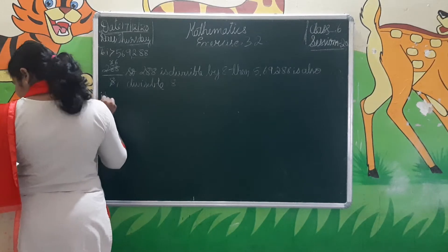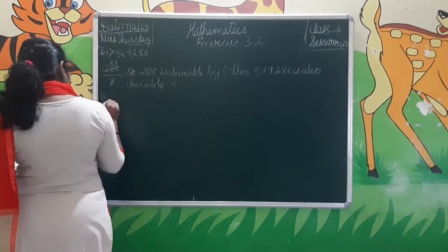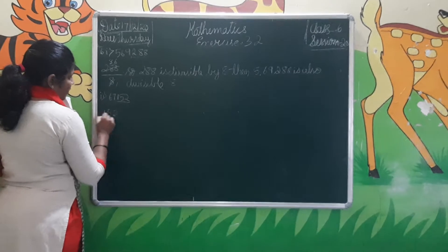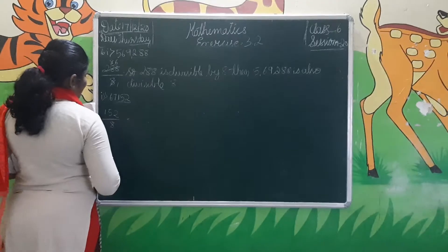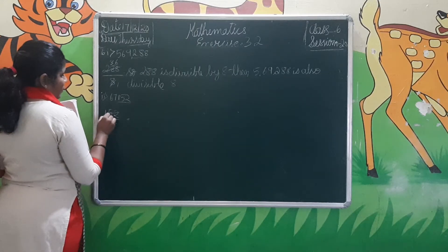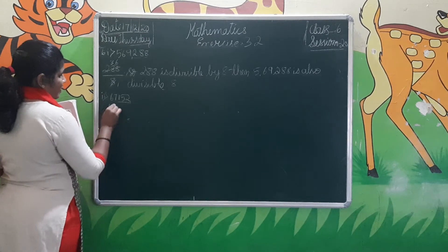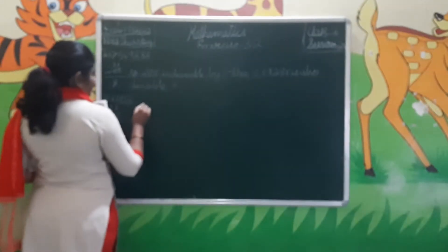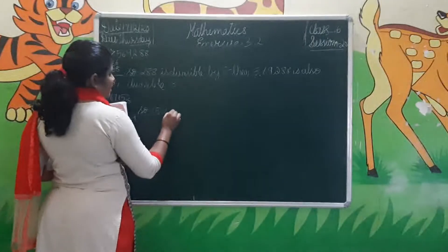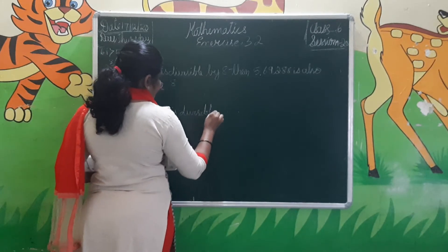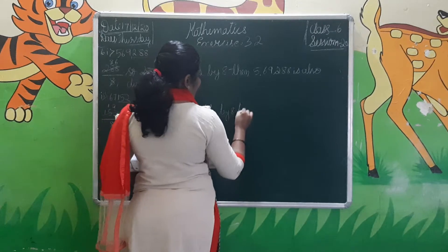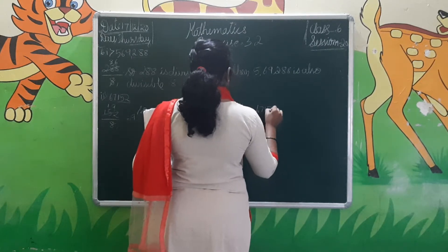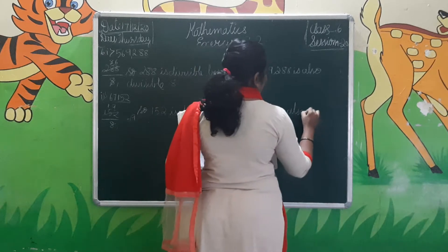Next, come to the second one. The number is 67,152. We take the last three digits: 152. Divide 152 by 8. 8 goes into 152 nineteen times — 19 eights are 152. So 152 is completely divisible by 8. Therefore, 67,152 is also divisible by 8.